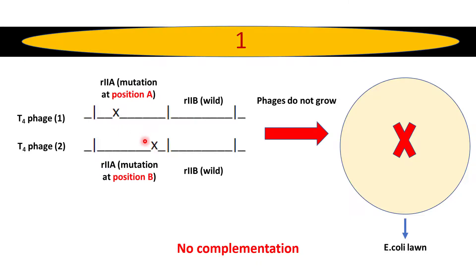Both mutations are present in the same locus but at different positions in the two types of T4 phages. The rIIb locus is wild type — no mutation is found in rIIb in either of them. When these two types of phages are mixed and applied to the bacterial culture, phages don't grow, which is expected because mutant strains don't grow in E. coli.